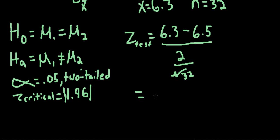So in the numerator, 6.3 minus 6.5 gives us negative 0.2. The denominator is the square root of 32, and dividing that into 2, we get 0.3536 roughly.